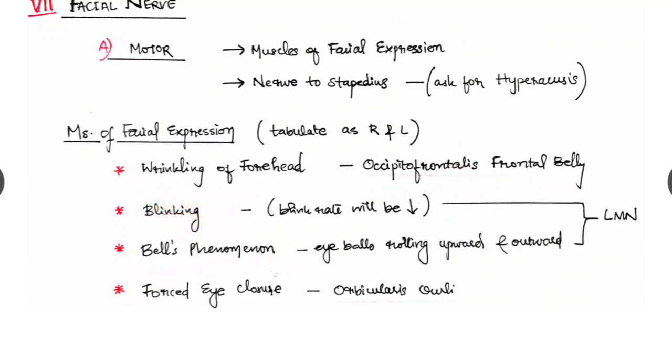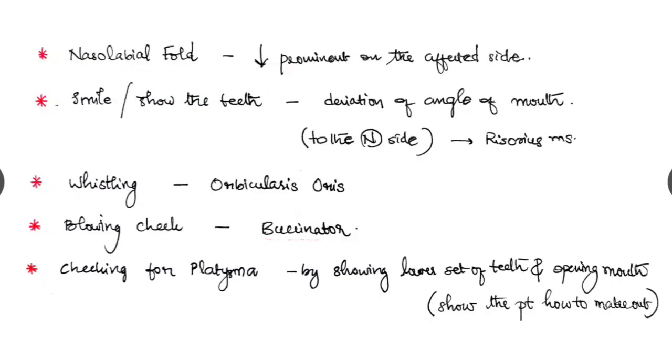Look for blinking. The blink rate will be reduced in lower motor neuron facial palsy. And look for Bell's phenomenon by asking the patient to close his eyelids where the eyeballs will roll upward and outward and it is seen in lower motor neuron facial palsy. Forced eye closure against the resistance we are giving to the eyelids. We are checking there the orbicularis oculi. Look for the nasolabial fold. If it is affected the prominence will be reduced in the affected side. Ask him to smile or show the teeth. And if there is any deviation of the mouth to the normal side it means there is a palsy. And there we are checking the risorius muscle.